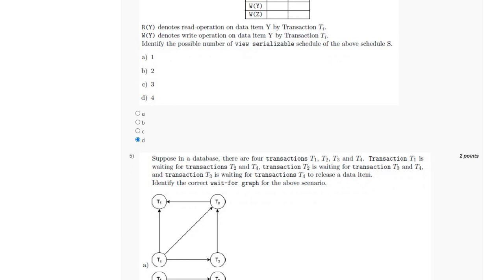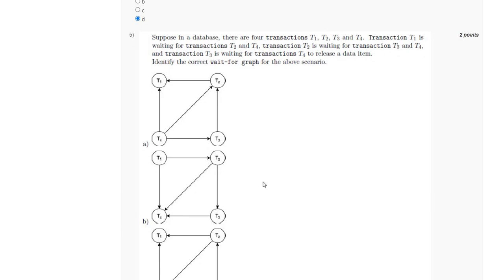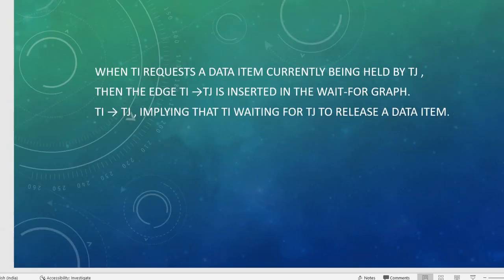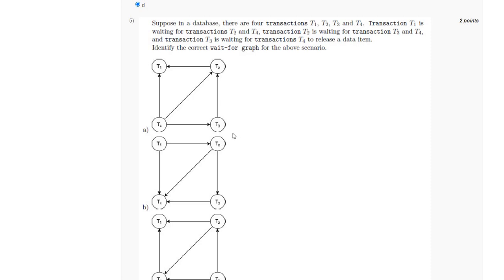For the fifth question, we have been given four transactions T1, T2, T3, and T4, and we have to identify the correct wait-for graph. When Ti requests a data item currently being held by Tj, the edge Ti→Tj is inserted in the wait-for graph, meaning Ti will wait for Tj to release the data item. Since T1 is waiting for transactions T2 and T4, the arrow will begin from T1 and end at T2, and similarly an arrow will begin from T1 and end at T4.